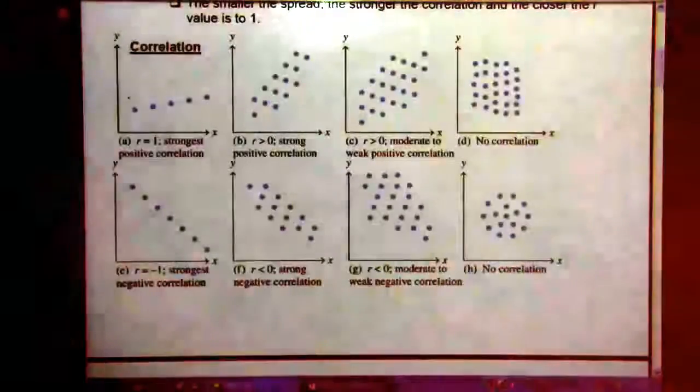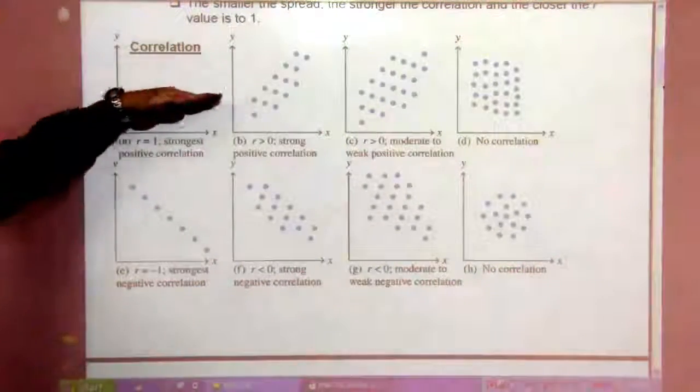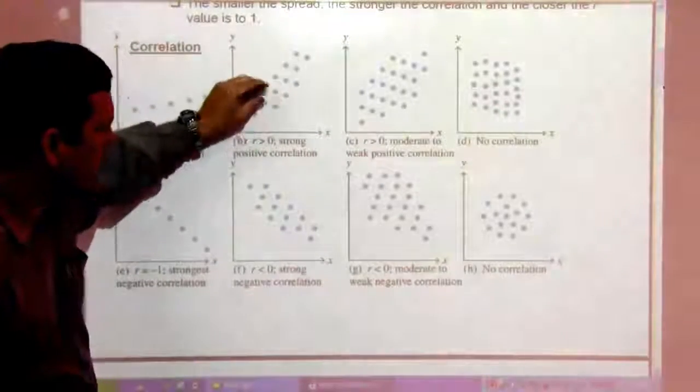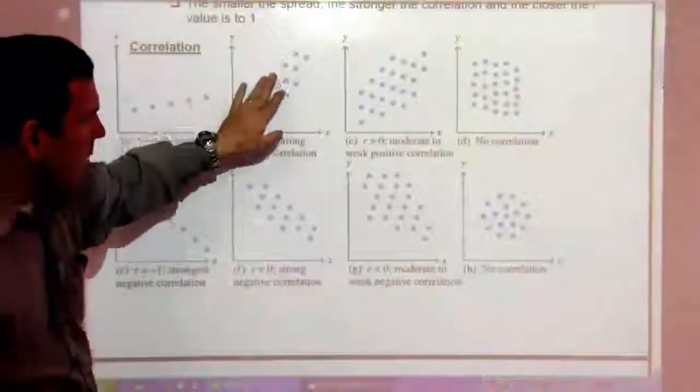So here's an example of where R is one. Very strong correlation makes a nice line. Here, it's all going in the same general direction. It's strong. It's not great. It's strong.